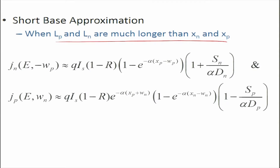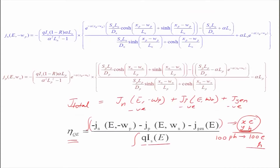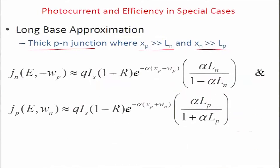As a result, in the short base approximation, Ln and Lp disappear and the surface recombination term appears. This is how we simplify the full equations, which contain both the surface recombination term and the diffusion length term, to calculate these currents with much simpler expressions.